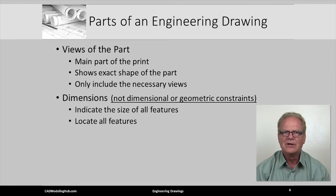The next element added to a drawing are the actual dimensions. Dimensions come in two types: they are either considered size dimensions or location dimensions. For example, the size of a hole and the location of that hole.